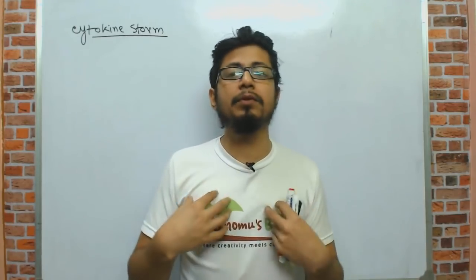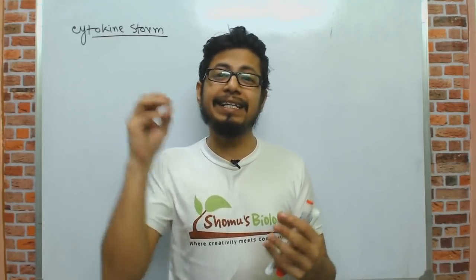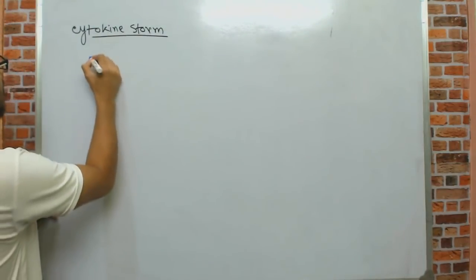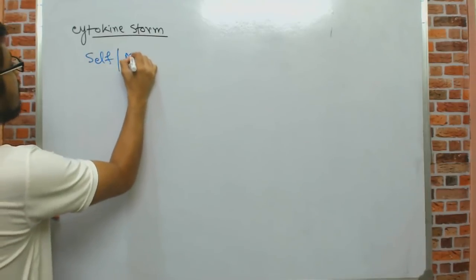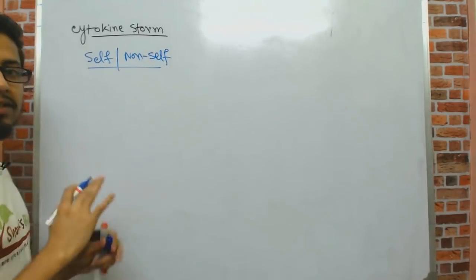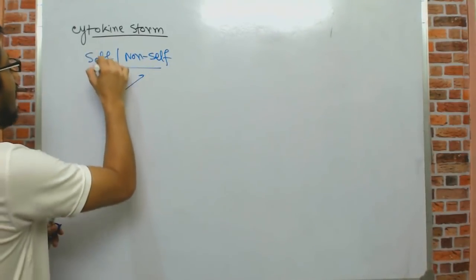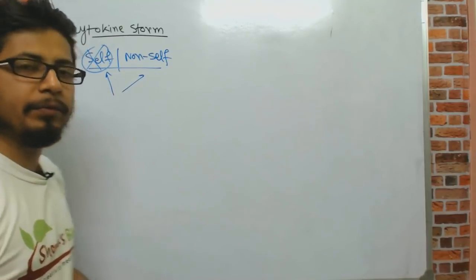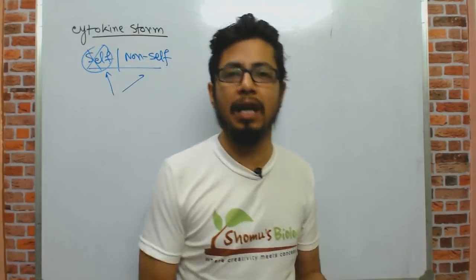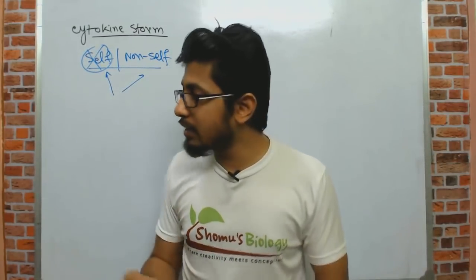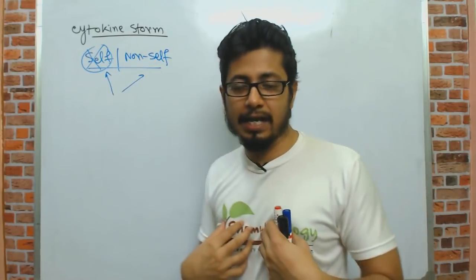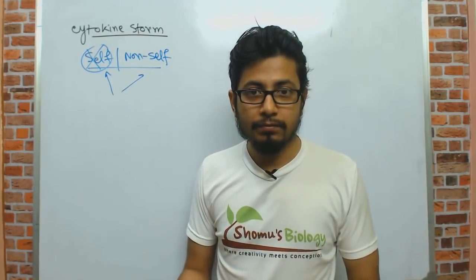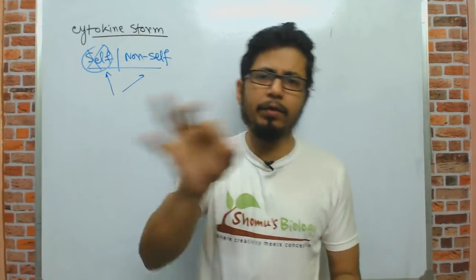In hypersensitivity, the immune system becomes hyperactive and creates damage to our own cells. Our immune system is supposed to differentiate between self and non-self. Once this sense is lost, instead of killing non-self, it starts killing self. When the immune system attacks our own organs — liver, lungs, kidneys — it becomes very difficult to live, because this is our own defense mechanism.